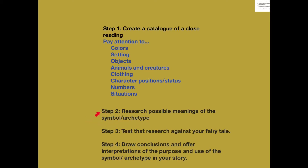The next step is to look at your list and begin researching. For example, I noticed that my hero is wearing a green outfit and carries a long staff. What can I find out about that? You're going to begin the process of trying to identify what these different objects, colors, and numbers might represent in a classic and literary study framework.